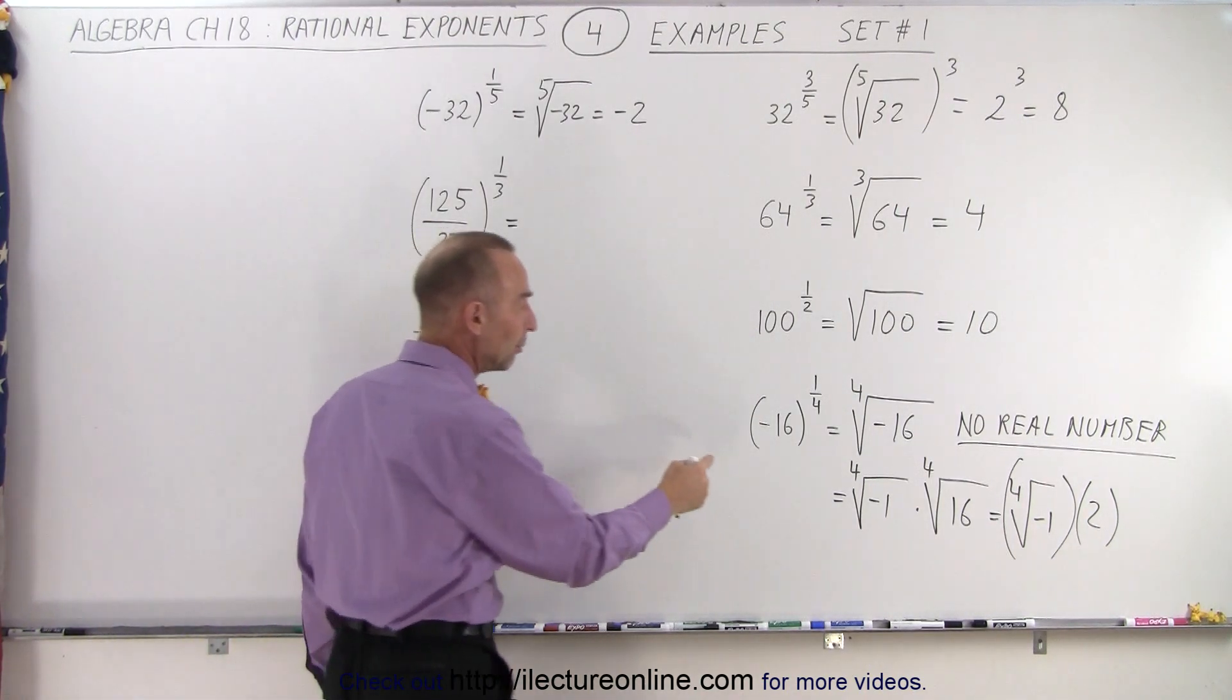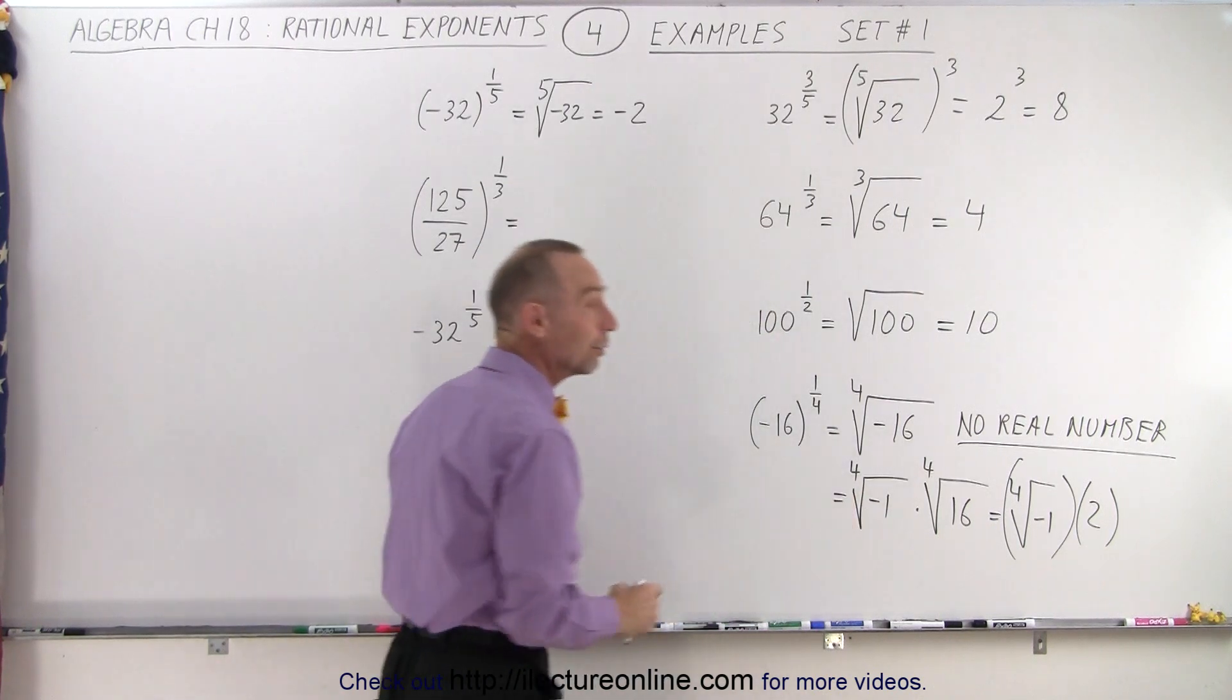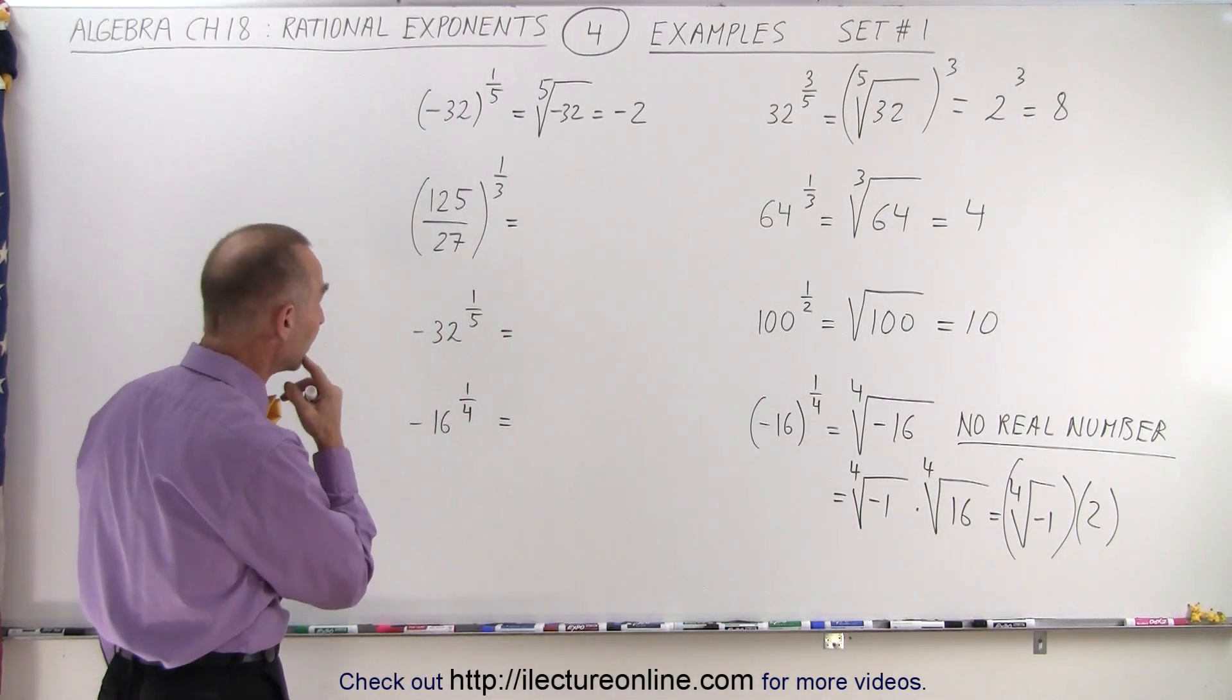And if it's a square root, then we can indeed take the square root of negative 1, which is the number i, that imaginary number.